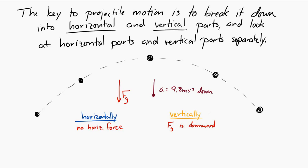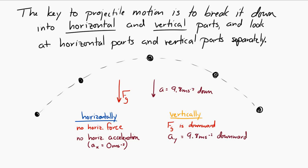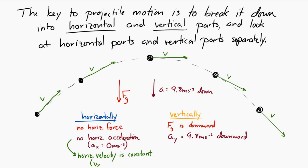Thinking about acceleration: horizontally, there's no force, so there's no acceleration — the horizontal component of acceleration is zero. Vertically, the acceleration is 9.8 meters per second squared downward, because the only force acting is gravitational force, just as in freefall. Since there's no horizontal acceleration, the horizontal velocity is constant in projectile motion — we can say vx is constant.